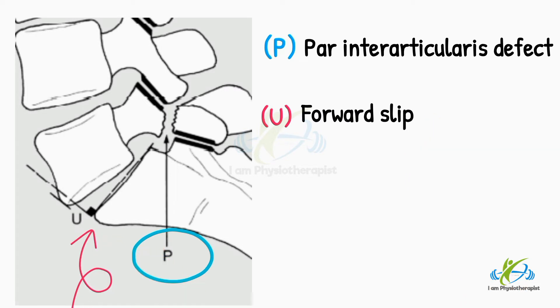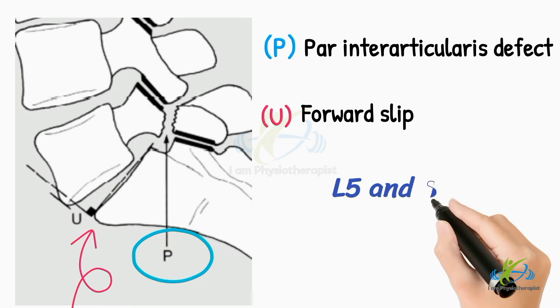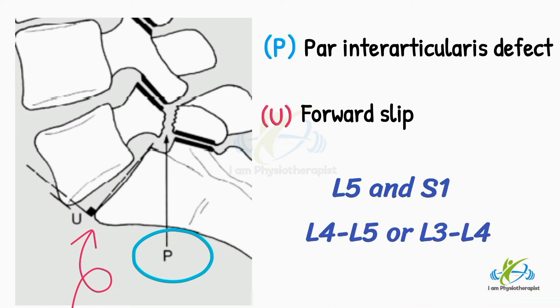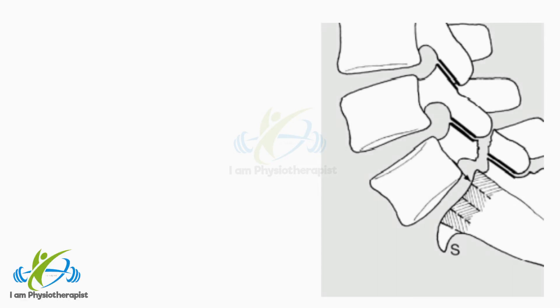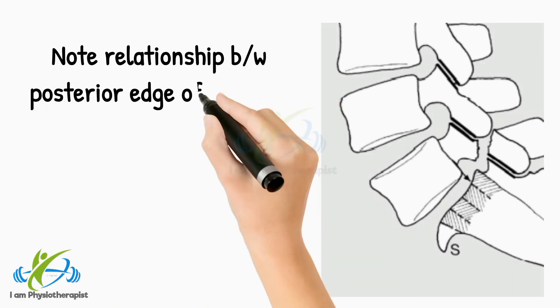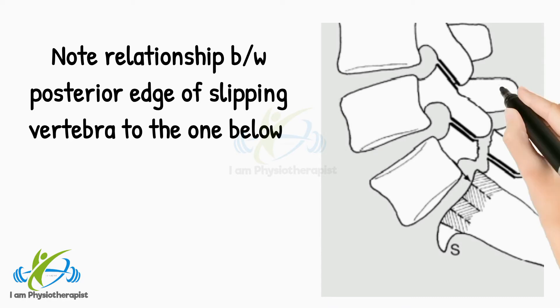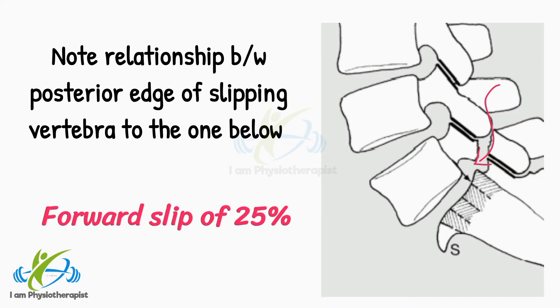The deformity may occur between L5 and S1, and much less frequently between L4-L5 or L3-L4. Note the relationship between the posterior edge of the slipping vertebra to the one below. The example shows a forward slip of 25%.